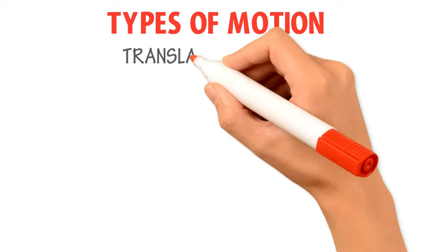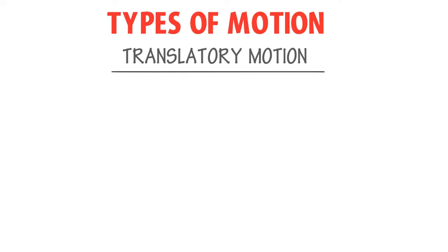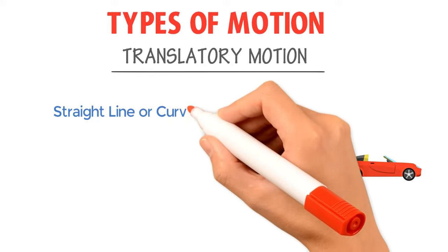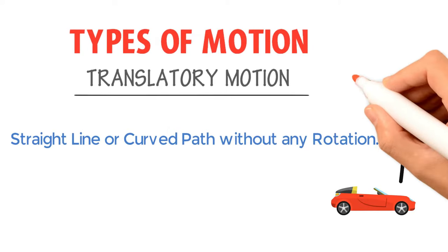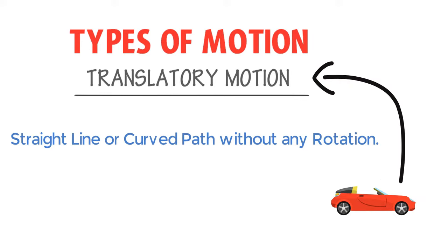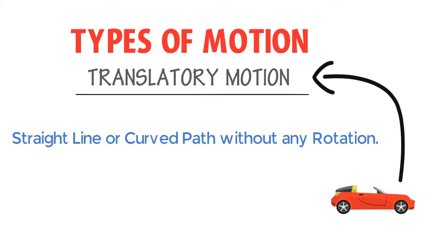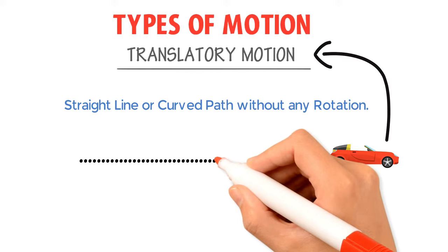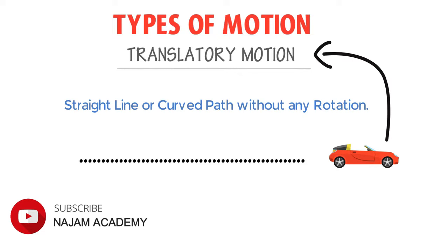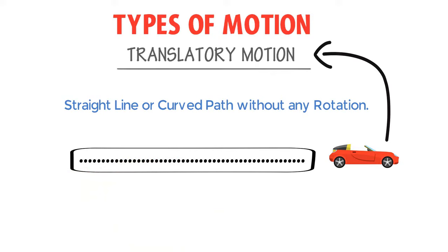First, let me teach you the concept of translatory motion. Remember that whenever you see any body moving along a straight line or a curved path without any rotation, we call such type of motion translatory motion. Translatory motion means that the body translates its every point throughout its motion, and each and every particle of the body moves parallel to each other.